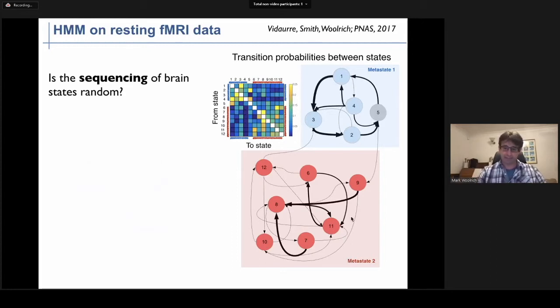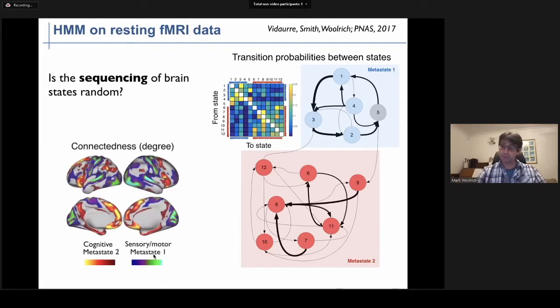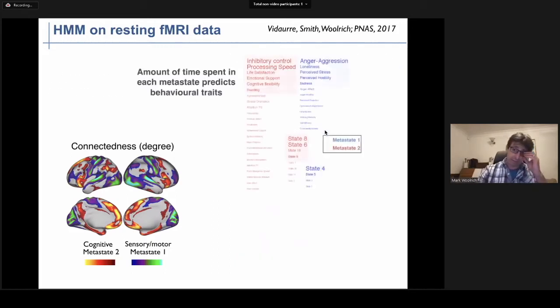What we find is that the states split into two distinct subgroups or metastates as we call them. Metastate one corresponds to primary sensory motor network states shown in green and blue, and metastate two corresponds to higher order cognitive networks shown in yellow and red. There's a tendency for the brain to cycle either between cognitive network states or between primary sensory motor network states with a much lower probability of switching between those two subgroups. So given this very distinct subgrouping of the network states into these metastates, we were interested in seeing if the amount of time that an individual spends in a metastate was predictive of behavior.